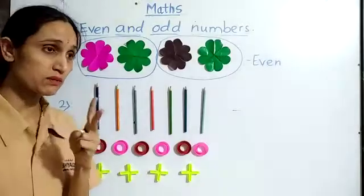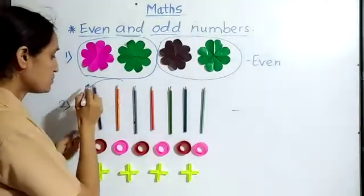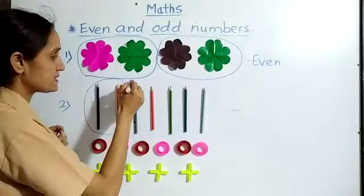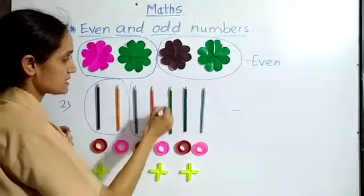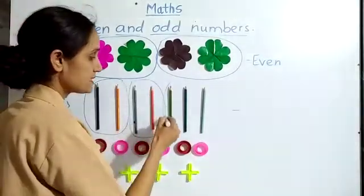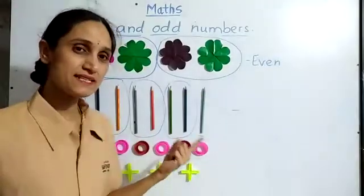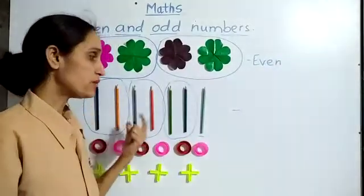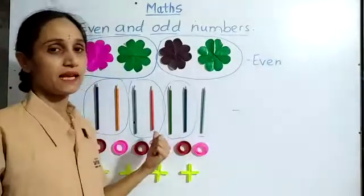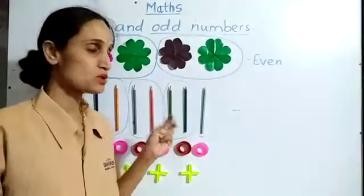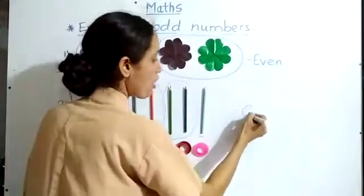Now I have to group them into 2. Suppose this is your first group of pencils. This is third. And one pencil is a single pencil. So we cannot group these pencils in a group of 2. So this is called odd.